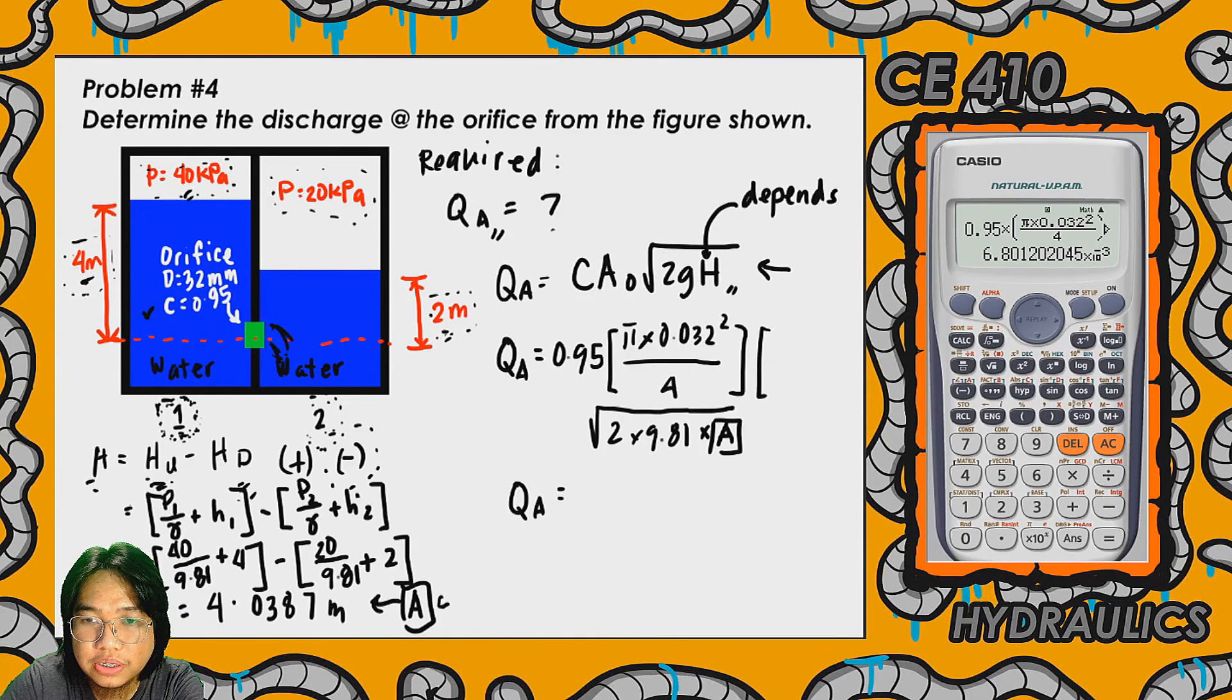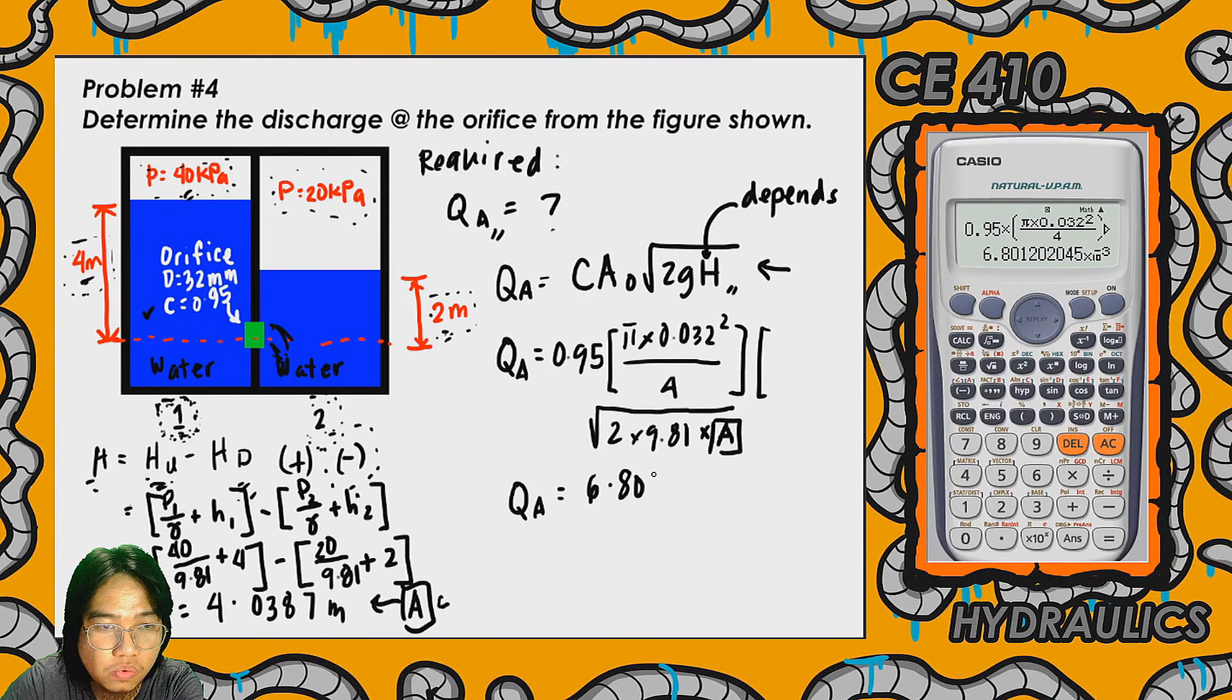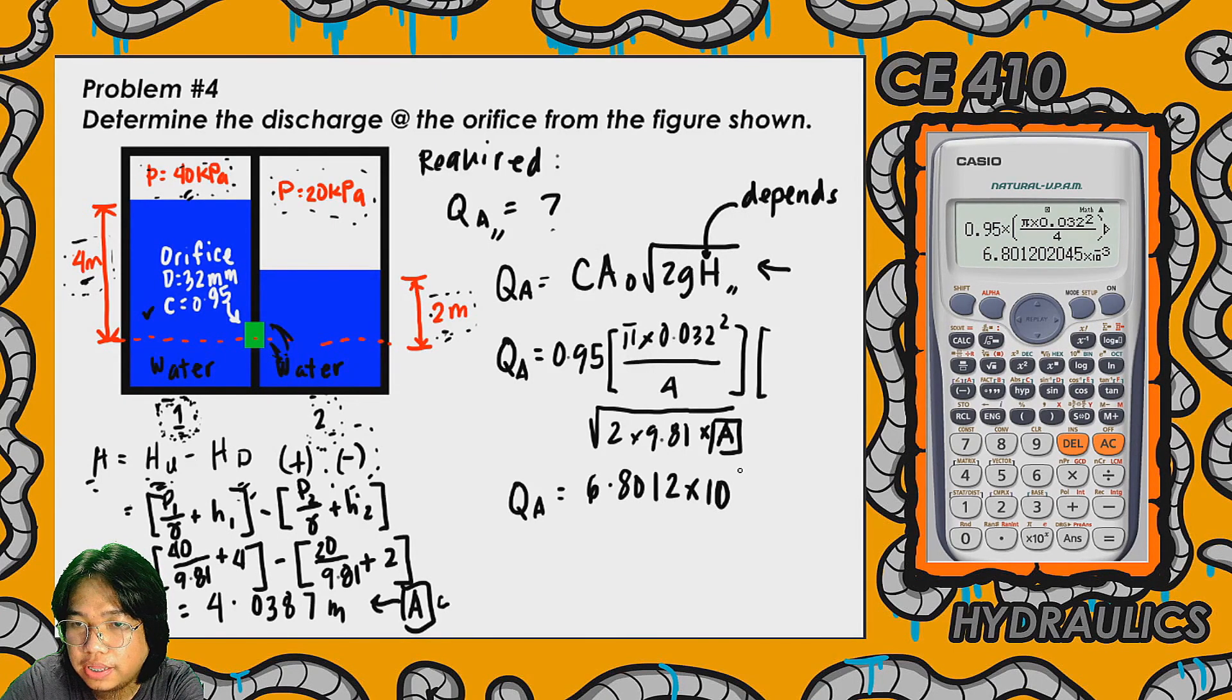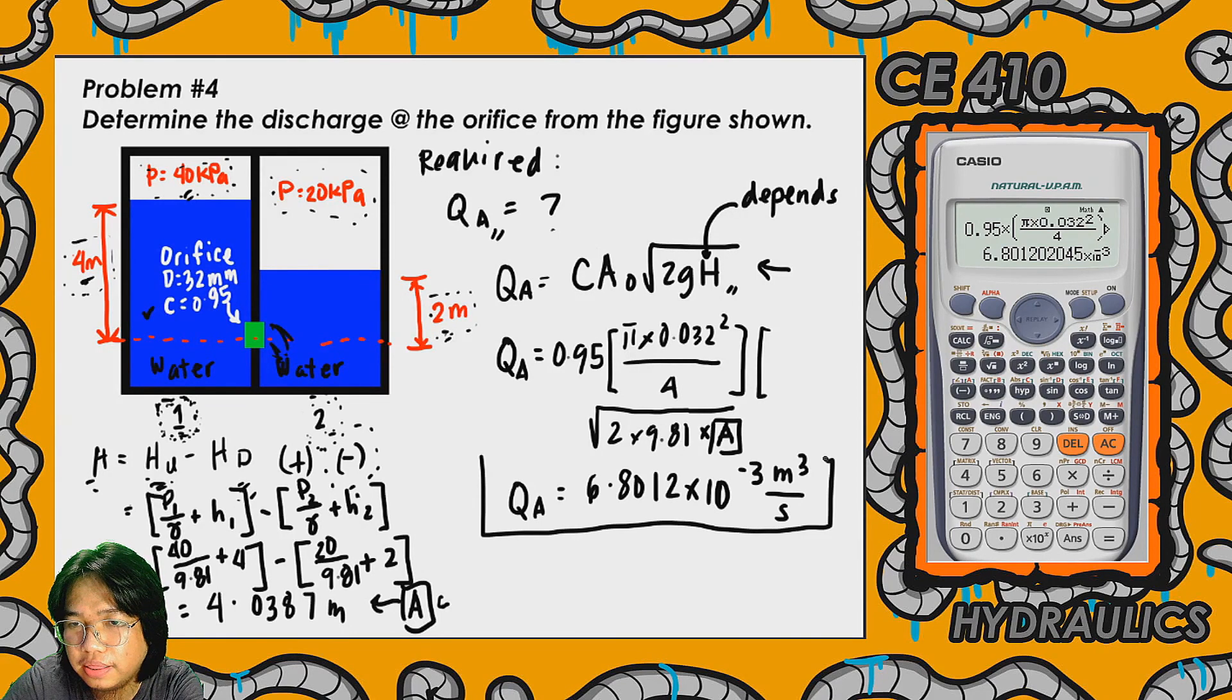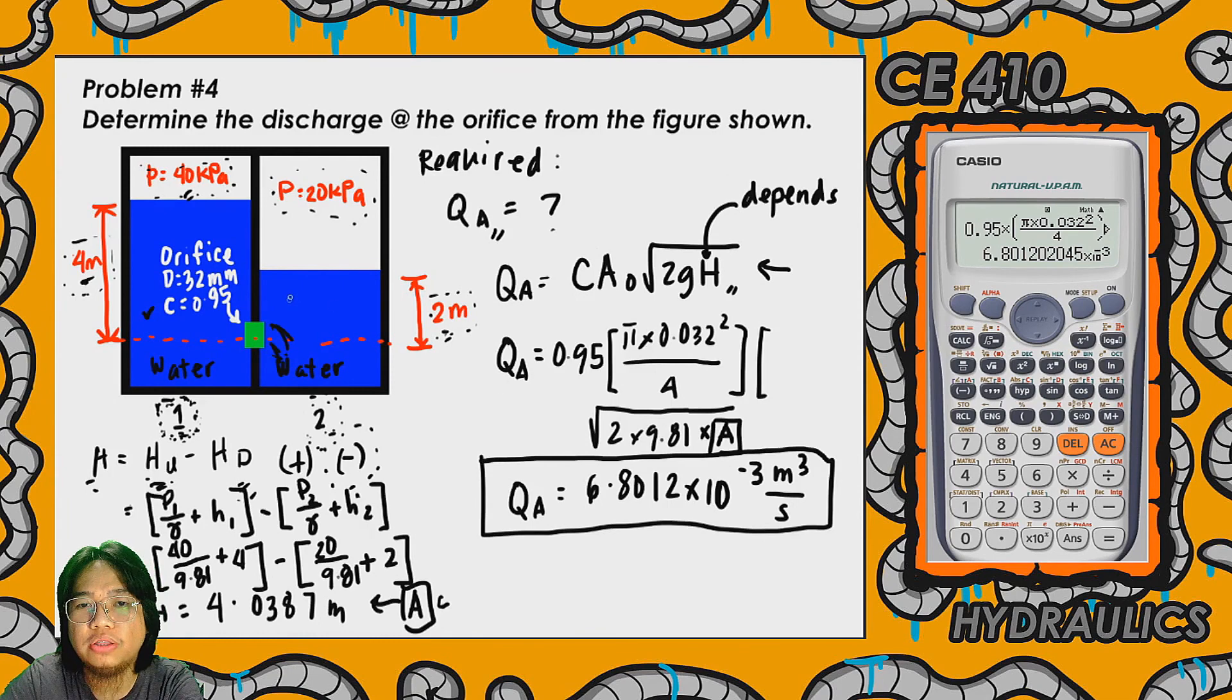The actual discharge is 6.8012 times 10 to the negative 3 cubic meters per second. This is the actual discharge of water or flow rate here at the orifice.